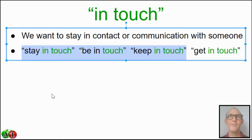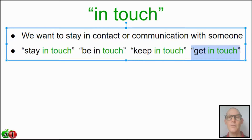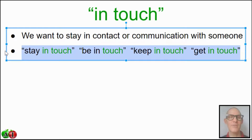You have been in touch in the past — you have communicated, maybe not frequently, but somewhat. The fourth one, 'get in touch,' is a little different. It's possible you communicated in the past, but right now you need to establish contact with that person. Maybe there's a business deal or arrangement that needs to be talked about. They're all pretty similar — it means staying in contact or keeping in communication with someone.